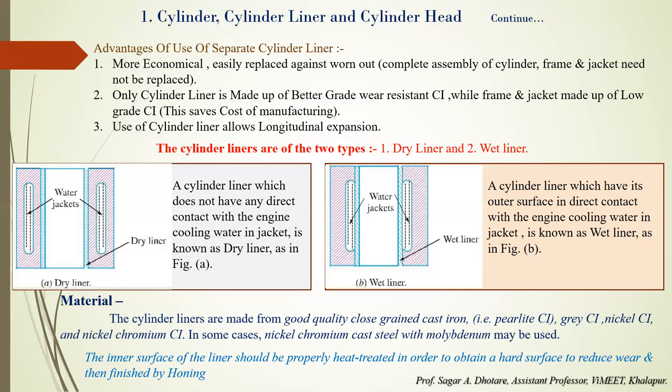Comparison between wet and dry liners: With wet liners, cylinder blocks are simpler and easier to manufacture; with dry liners, cylinder blocks are more complicated and harder to manufacture. Wet liners provide more effective cooling because the jacket water is in direct contact with the liner. In dry liners, there is a space between the liner and the cylinder, making cooling less effective compared to wet liners. With wet liners, there is a danger of water jacket leakage; with dry liners, there is no such possibility.